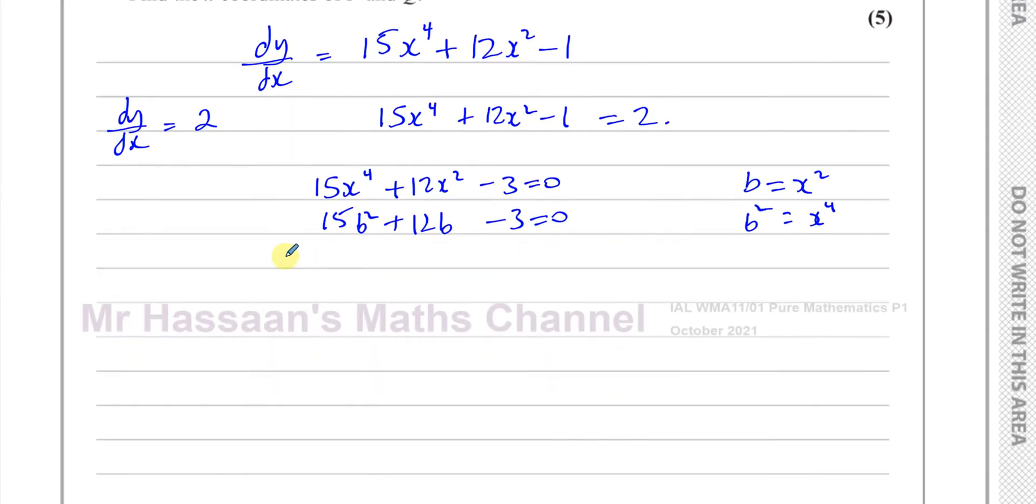Now this is something that we can solve. It's what we recognize as a quadratic. We can even make life a bit easier for ourselves. We can divide each of the terms by 3. All of them are divisible by 3. So this will become 5b squared plus 4b minus 1 equals 0. And that's something that can factorize. But generally something like this where you have a number in front of the squared term, either you split the middle term or you do some sort of guessing and checking.